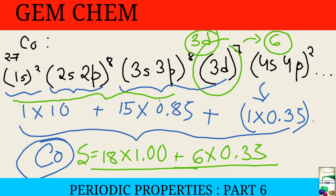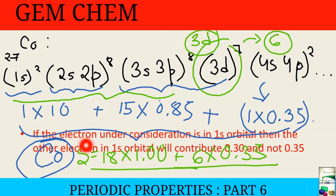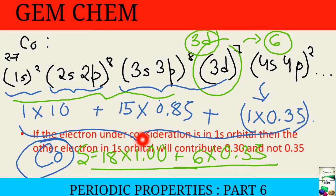One important special case: if the electron under consideration is in the 1s orbital, the other electron in 1s contributes 0.30, not 0.35.